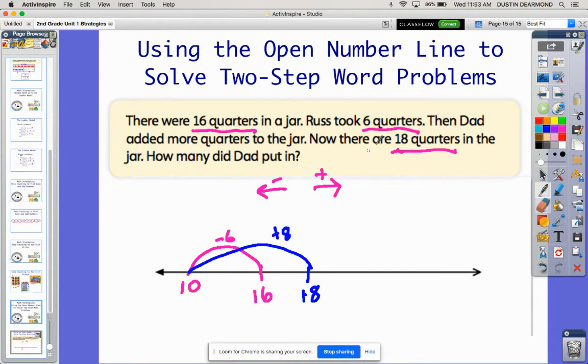So let's, again, let's walk through what happened with the story and with my number line. There were 16 quarters in the jar. Here's where we started. 16. Russ took away six. So he subtracted six, which took me over here to 10 with my subtraction. 16 minus six gave me 10.